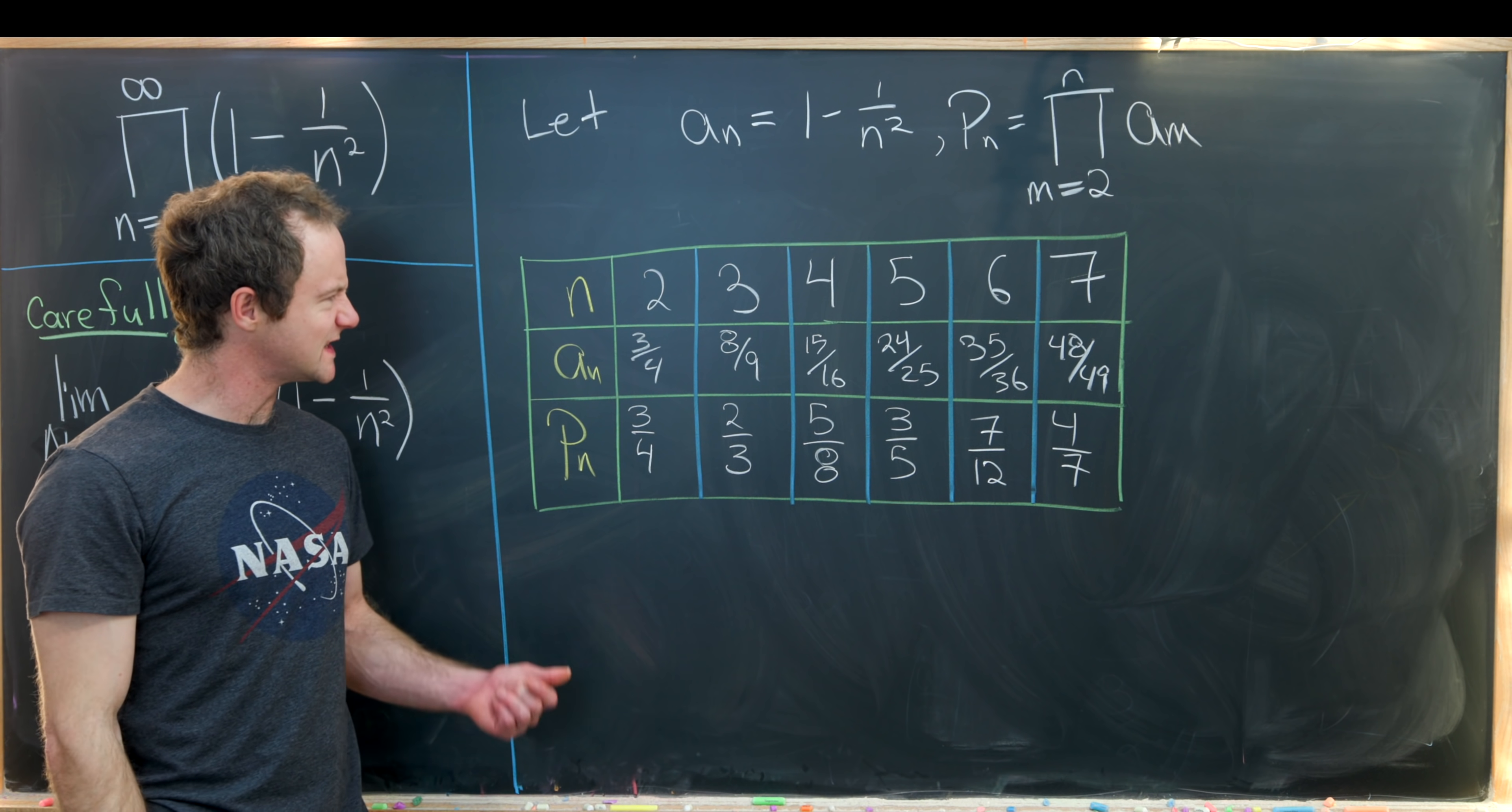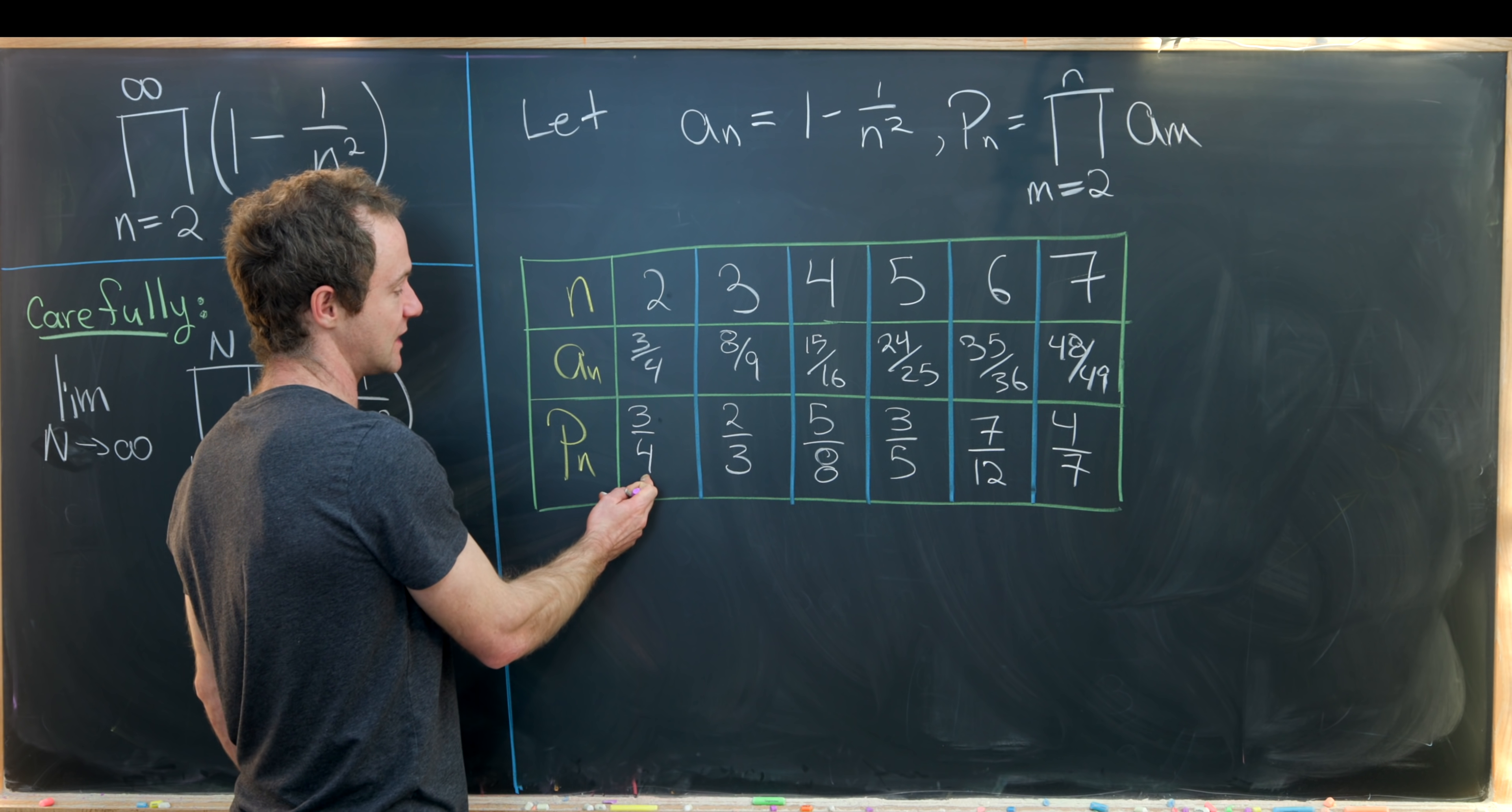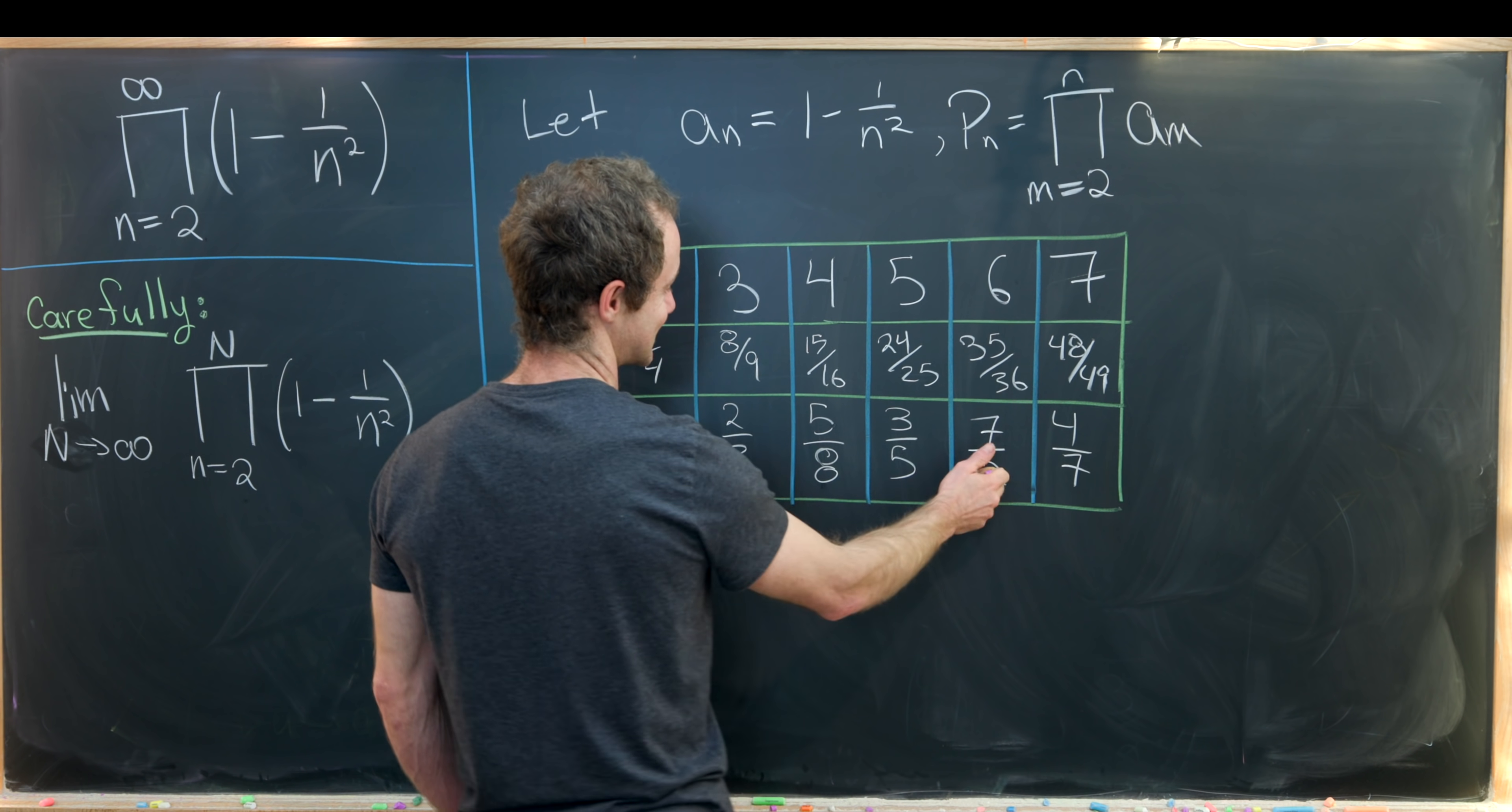And now looking at our chart, we'll see that all of the even terms have a nice structure to them. Notice the numerator is 1 more than n and the denominator is twice n. So here we have 2 plus 1 and 2 times 2. Here we have 4 plus 1 and 4 times 2. Here we have 6 plus 1 and 6 times 2.